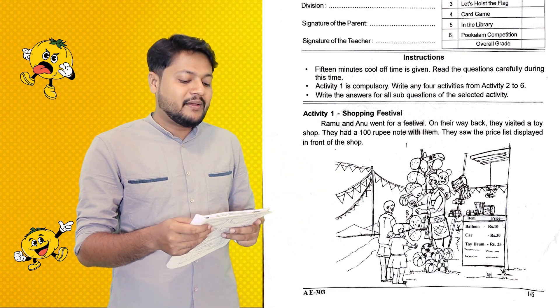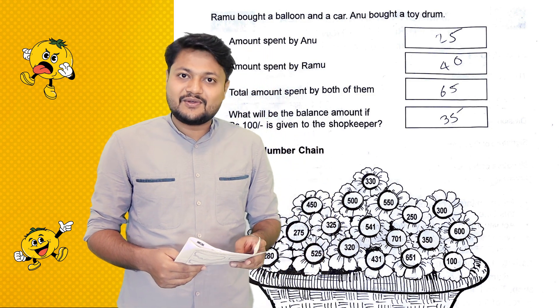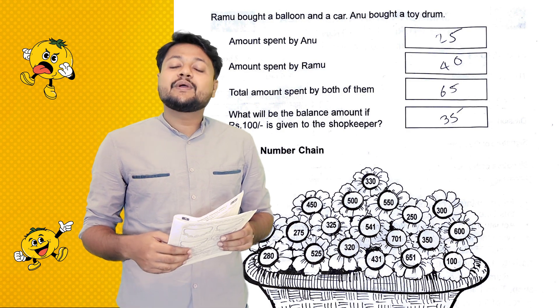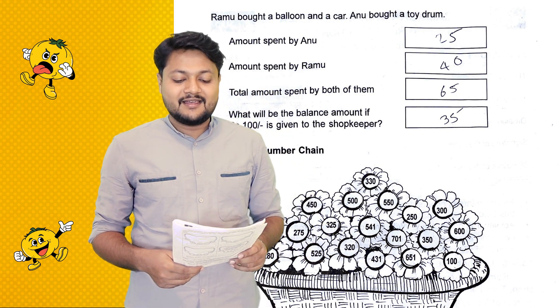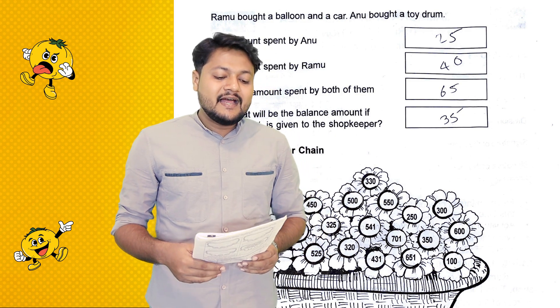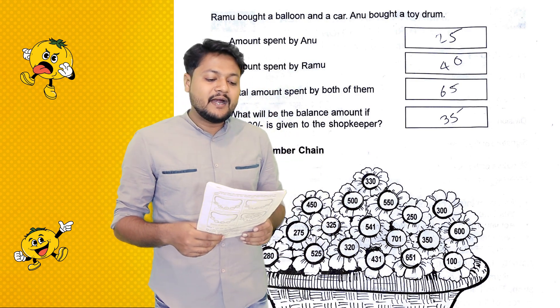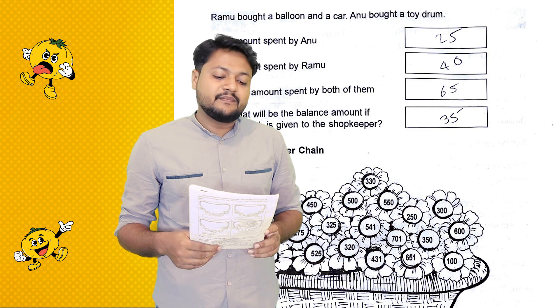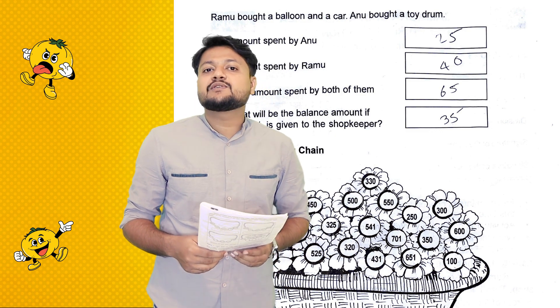Ramu bought a balloon and a car. Anu also went to the toy shop. The total amount spent by both of them: 40 plus 25, that is equal to 65 rupees.